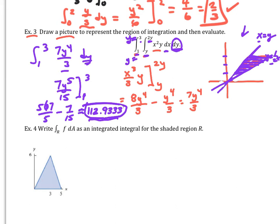If we wanted to switch the order and make vertical cuts instead, we'd encounter multiple different sub-regions — one situation here, another there, and a third further along — requiring three separate double integrals to be added together. So the horizontal-cut setup is much more efficient for this region.